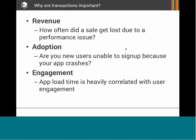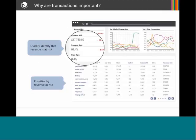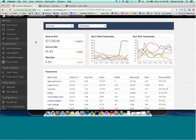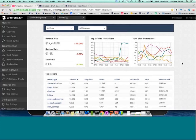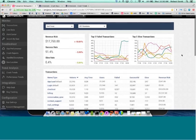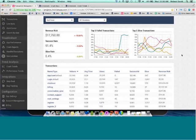The second metric is adoption. Are you losing new users because they tried to sign up and the app crashed, or it sent a network request and couldn't complete that login or account registration transaction? The last is engagement. Metrics like application load time are often heavily correlated with user engagement — many customers track this very closely because if your app takes a long time to load, people get frustrated and stop using it. I have a few screenshots here, but I'll also walk through a live demo of transactions.